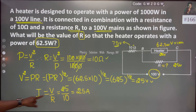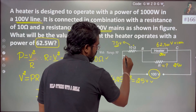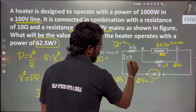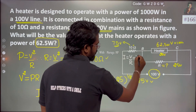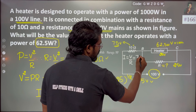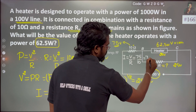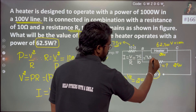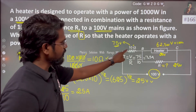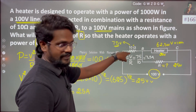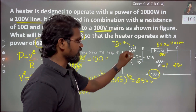Current through the heater: I equals V by R. The voltage across the heater is 75 V and the resistance is 10 Ohm, which equals 7.5 Ampere.